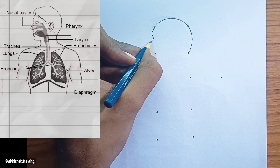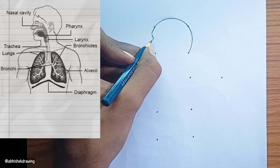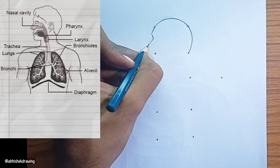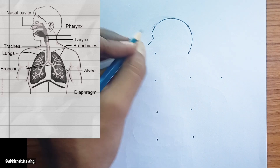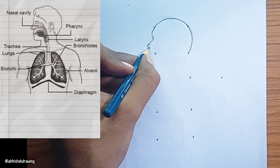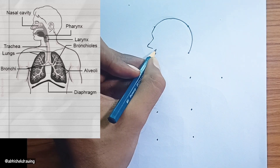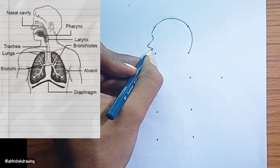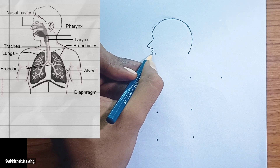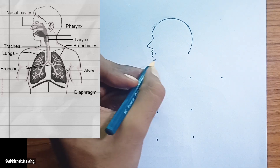Larynx. Commonly known as the voice box, the larynx contains the vocal cords and is crucial for sound production. It also prevents food from entering the trachea.